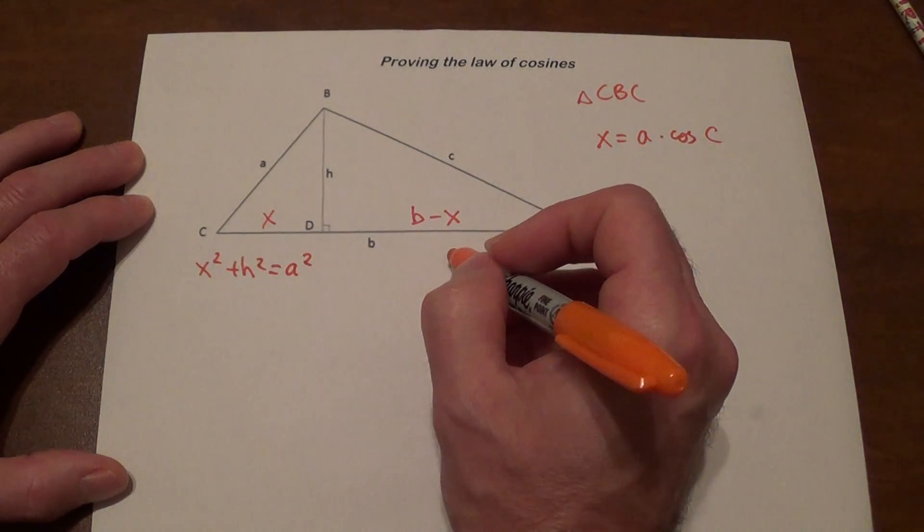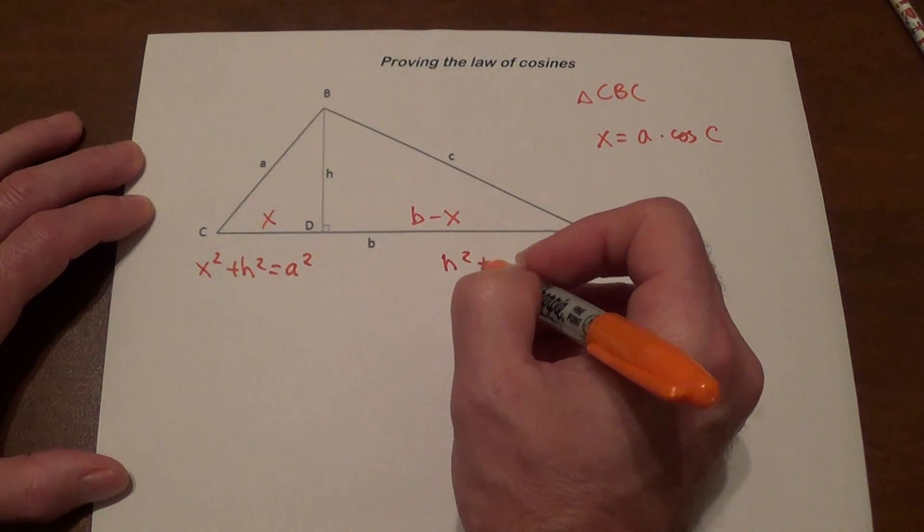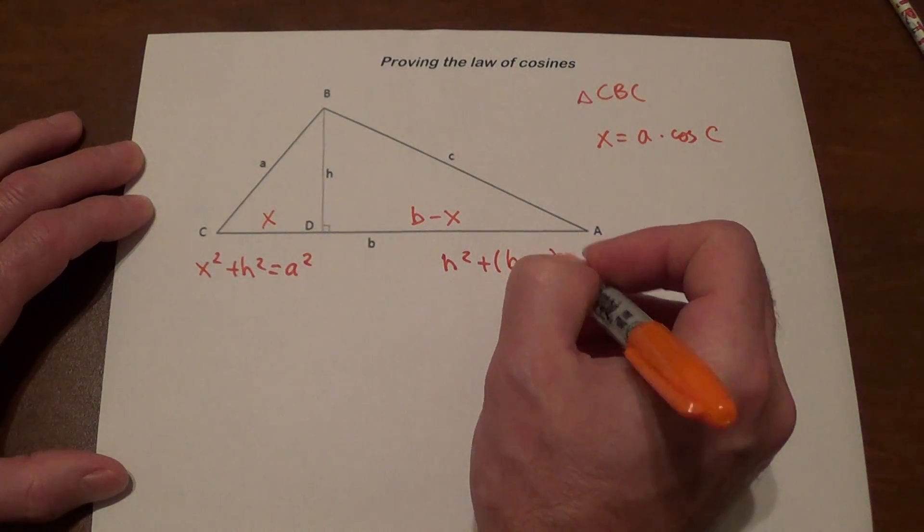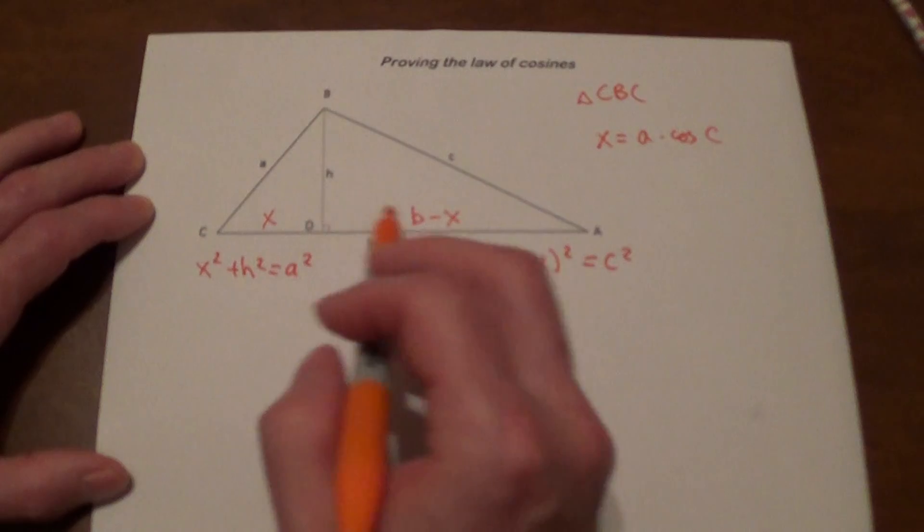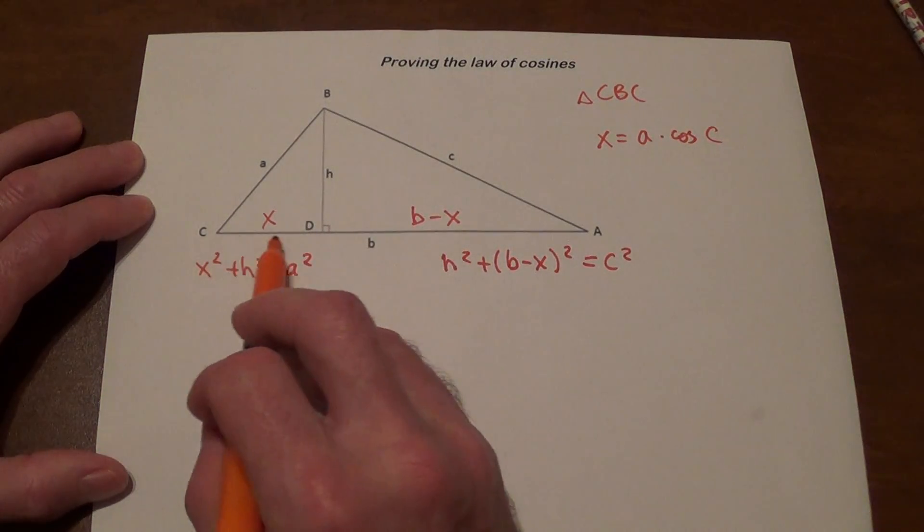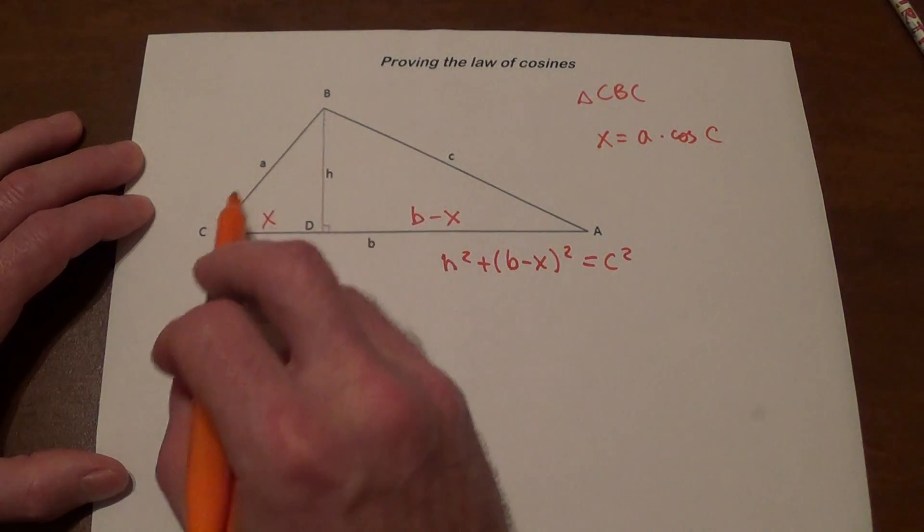From this triangle, we know that h squared plus b minus x squared equals c squared. This is based on the Pythagorean theorem for each right triangle. One leg squared plus the other leg squared equals hypotenuse squared.